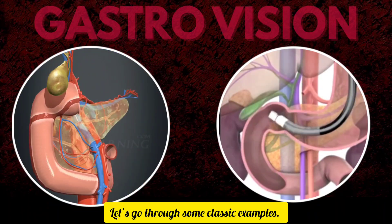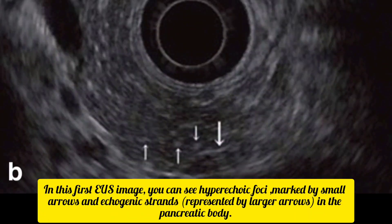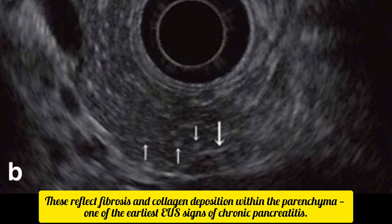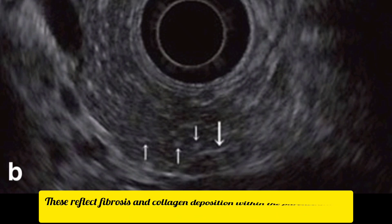Let's go through some classic examples. In this first EUS image, you can see hyperechoic foci marked by small arrows and echogenic strands represented by larger arrows in the pancreatic body. These reflect fibrosis and collagen deposition within the parenchyma, one of the earliest EUS signs of chronic pancreatitis.